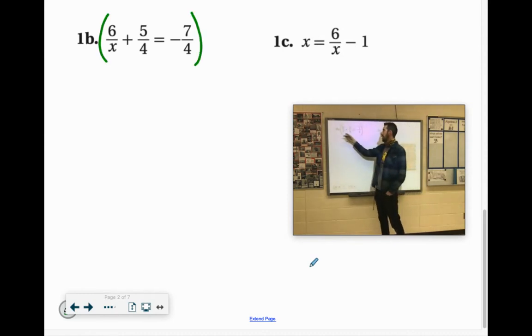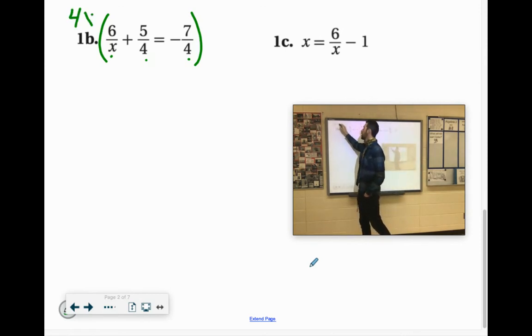Now the denominators, I have x, I have 4, and I have 4. The 4s are the same. So we need to have 4 and an x. So we're going to multiply by 4x to everything.